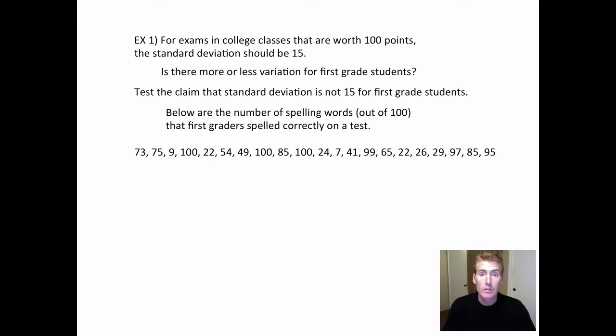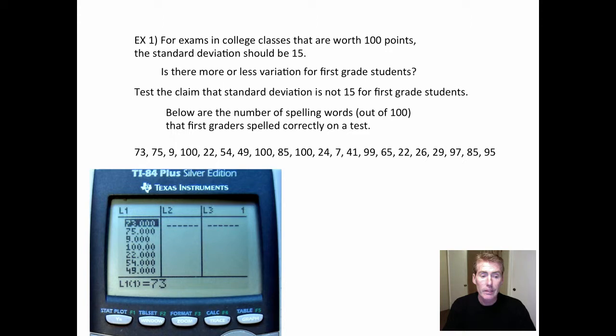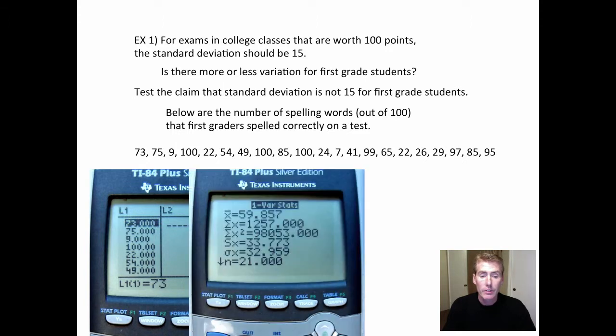So with this list of data, which is how many words they got out of 100, you need to put that in a list, and then find the mean and standard deviation, although for this section, the mean is not relevant. All you need is the sample size of 21 and the standard deviation S. So here's the sample data that we need. All right, now let's go do the hypothesis test.